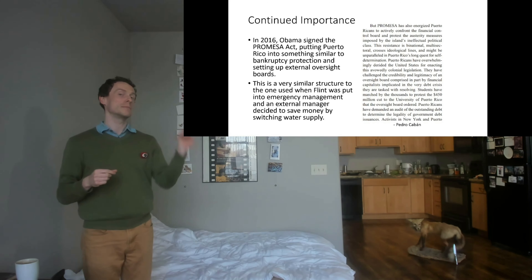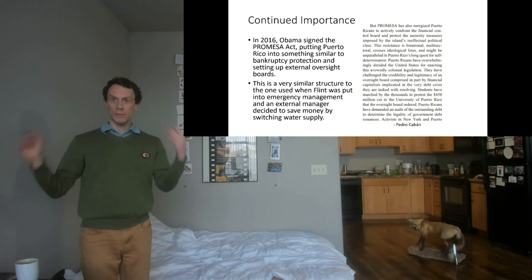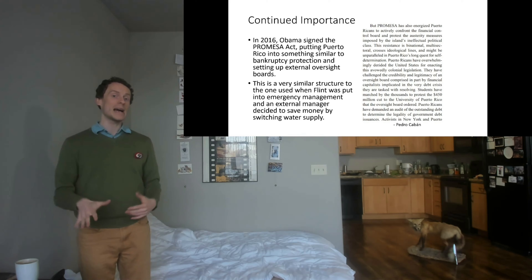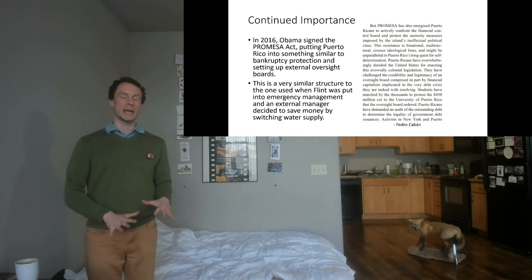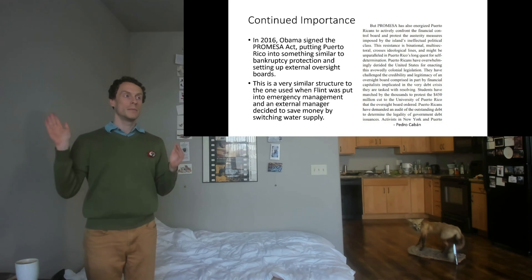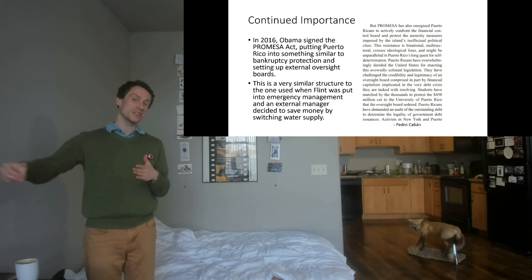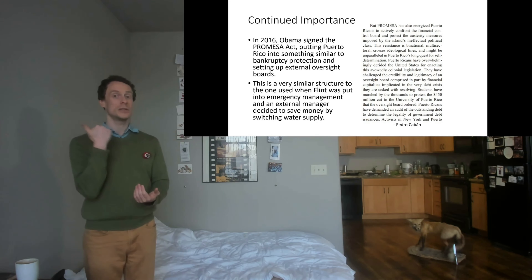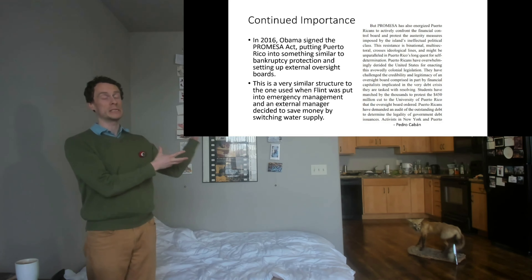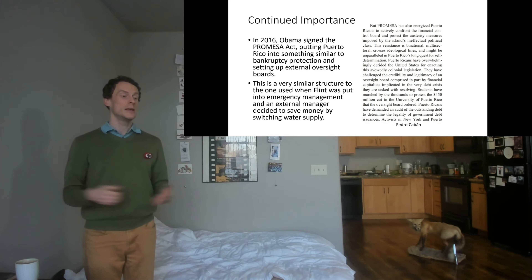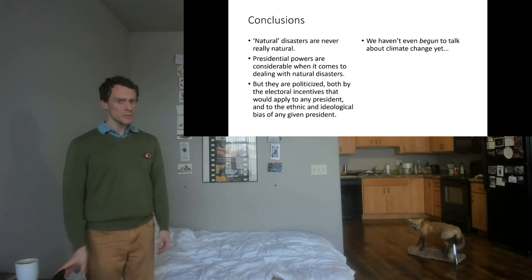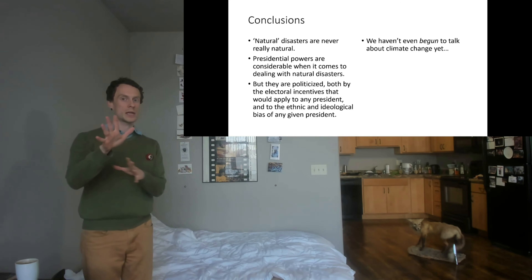Obama's PROMESA Act put an external board — largely made up of CEOs — in charge of Puerto Rican finances, and the Governor of Michigan put an external overseer in charge of Flint's resources. Both ended up making decisions that made those places more vulnerable to low-probability but high-impact events. The way cuts are made matters a lot — if it's done by an external person with no representation, no accountability, and no limits, that's not a democratic way of making cuts.